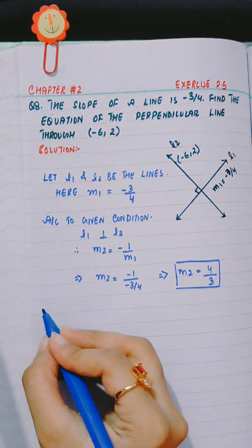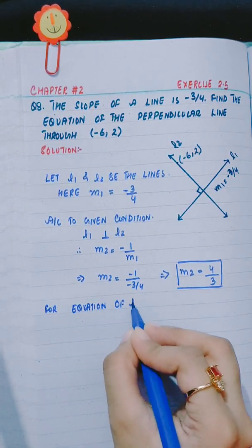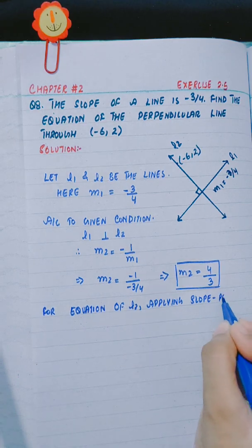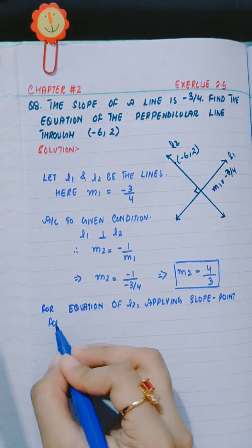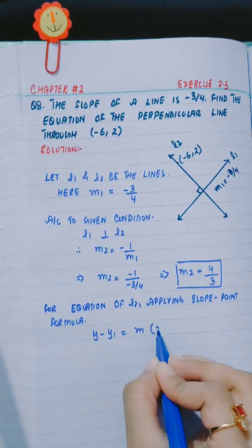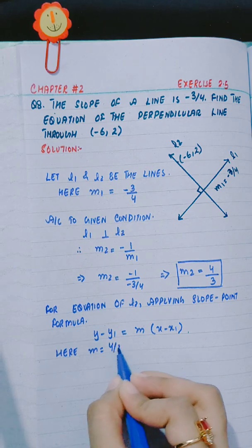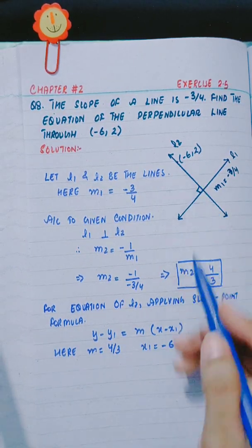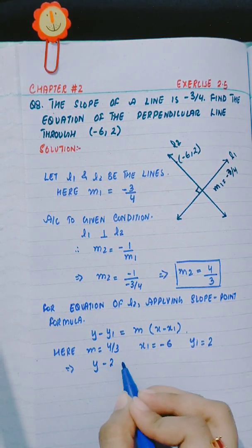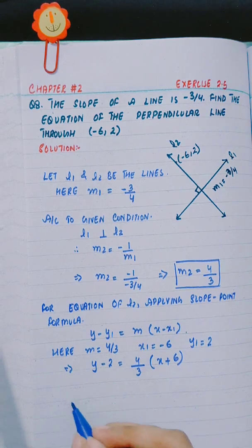Now, for the equation of L2, applying the slope-point formula. The slope-point formula is Y minus Y1 is equal to M into X minus X1. Here M is equal to 4 by 3, X1 is minus 6, and Y1 is 2.